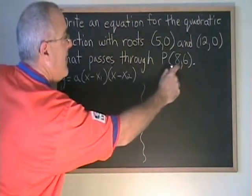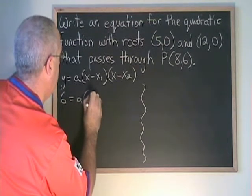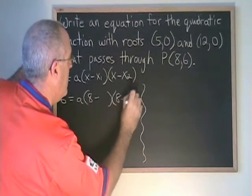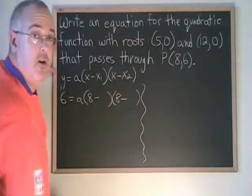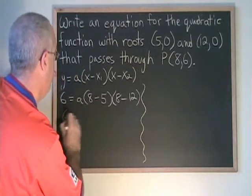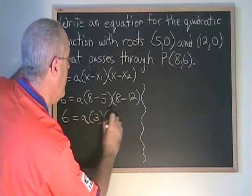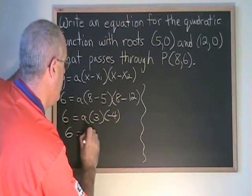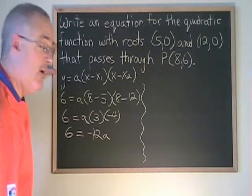The 6 and the 8 go in the y and x positions, and the 5 and the 12 go in the x₁ and x₂ positions. 8 minus 5 is 3, 8 minus 12 is negative 4, and that simplifies to 6 equals negative 12a.